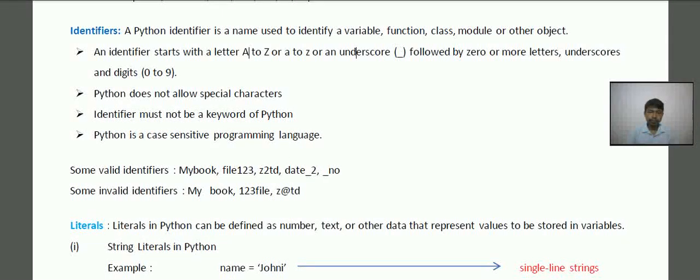So we cannot have 123file because it cannot start with the digit. The next z2dt, so this is also valid. date_2, this is also valid because underscore is allowed. Then _no, this one is also allowed. Next, some invalid identifiers.